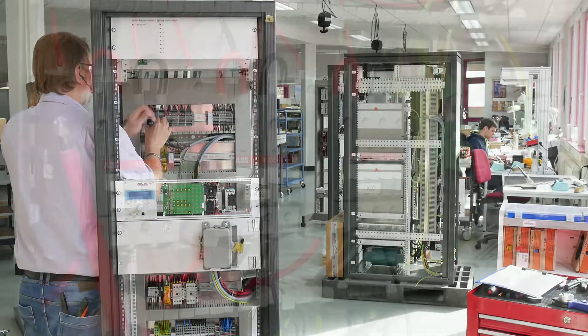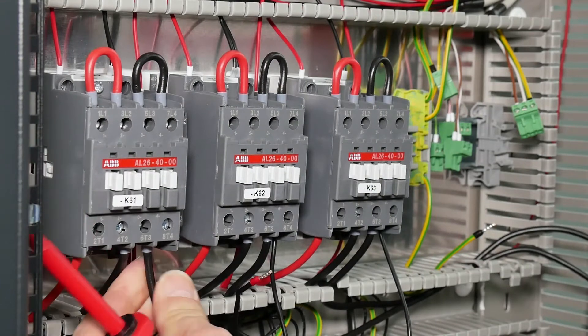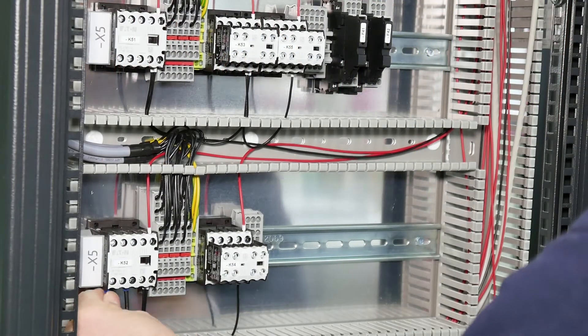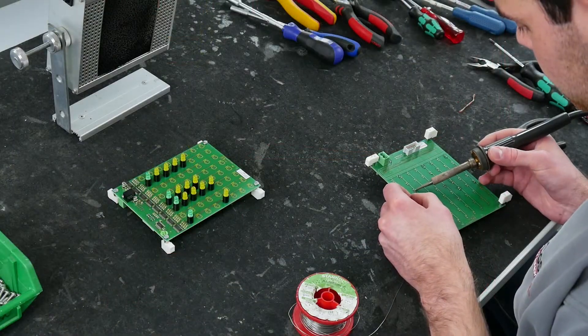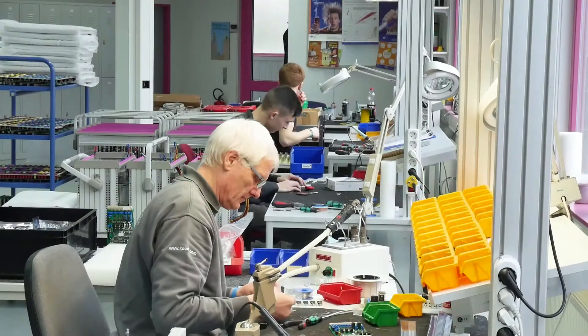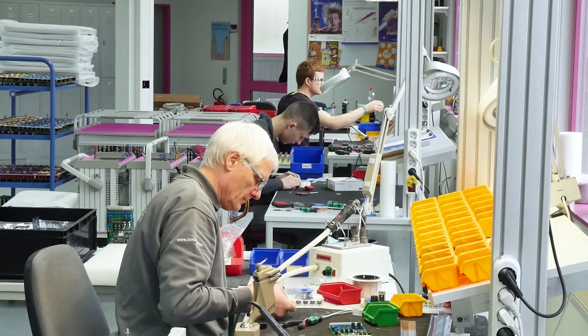The C systems are designed for circuit breaker testing, while our CF systems can be used for drive tests on disconnectors and earthing switches. For maximum testing functionality, both devices can also be combined in a CCF system, designed for testing the whole Switchgear.